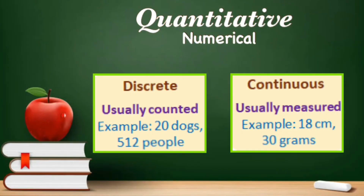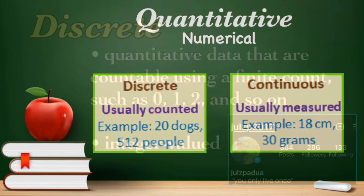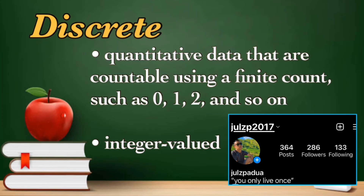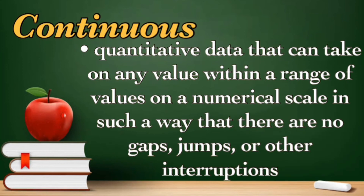There are also two types of quantitative data: discrete and continuous. Discrete data are quantitative data that are countable using finite counts such as 0, 1, 2, and so forth — integer values. For example, the number of Instagram followers I have is 286. This is discrete because it's impossible to have 286.5 followers. All data that are not discrete are continuous. Continuous data are quantitative data that can take on any value within a range of values on a numerical scale, with no gaps, jumps, or interruptions. For example, the length of your phone is about 5.32 inches.